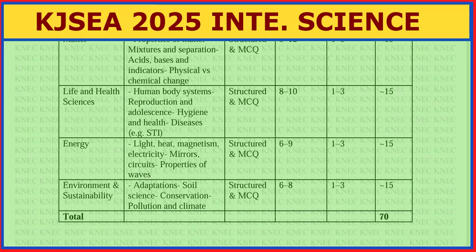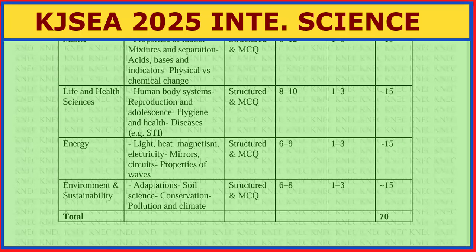Questions in the Energy strand range from six to nine, each carrying one, two, or three marks, giving you 15 marks for Energy. Then we have Environment and Sustainability — the last strand — covering adaptations, soil science, conservation, pollution, and climate. Six to eight questions carry a maximum of 15 marks. Adding 15 plus 15 plus 15 plus 10 gives you 70 marks for Section B.